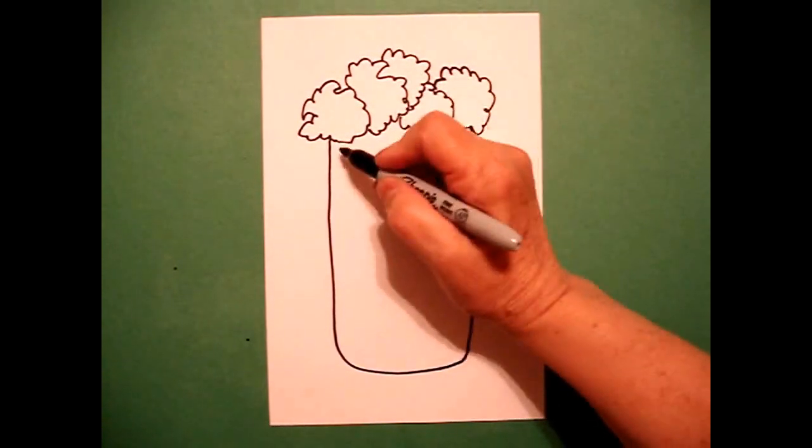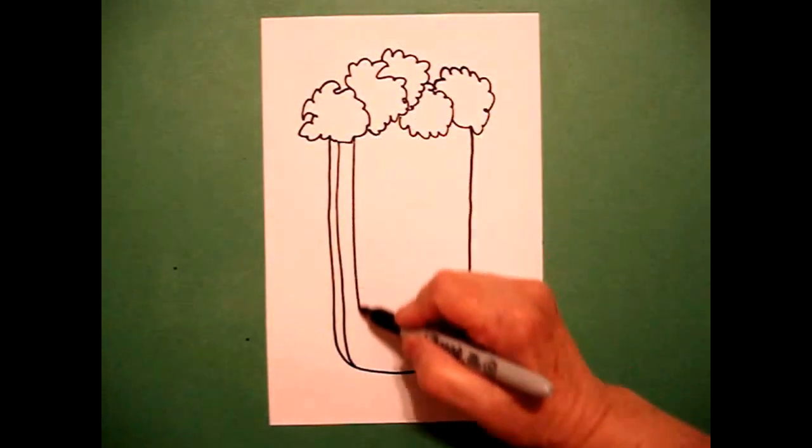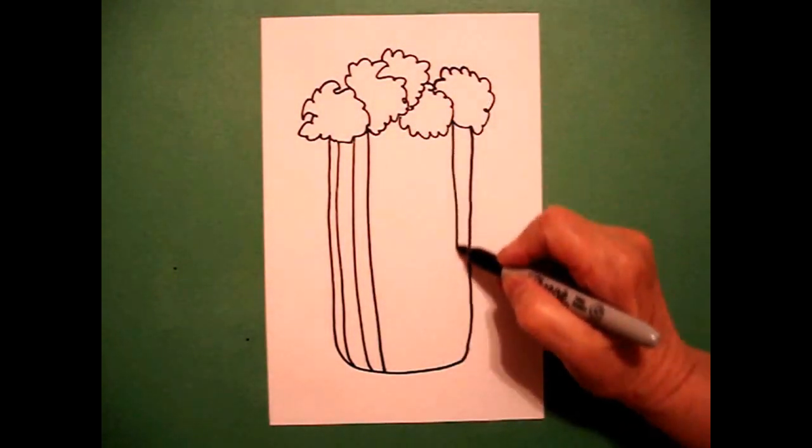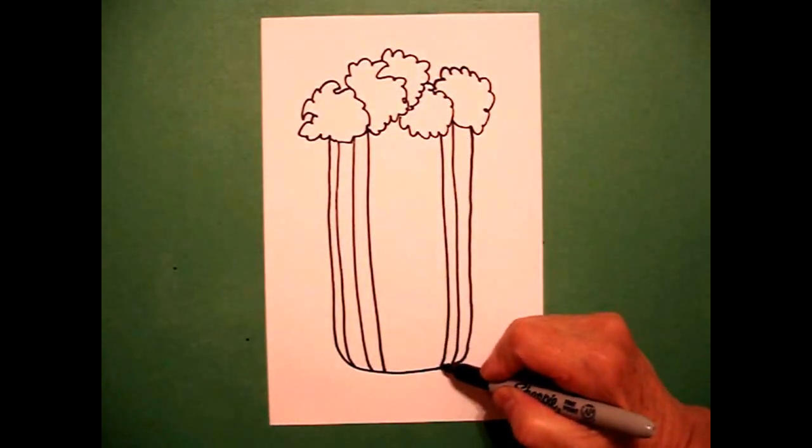Now I come back on the inside and I draw straight lines, curving a little bit down at the bottom. First I do the left, then I come over and do the right, they kind of curve at the bottom.